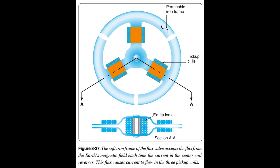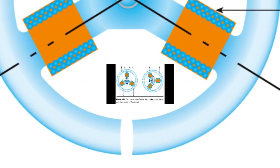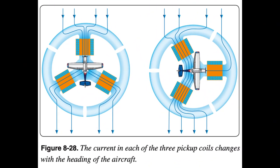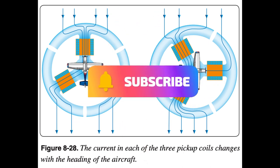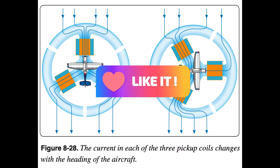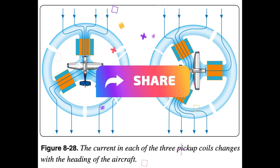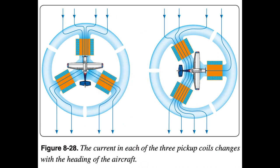During the times when this current reaches its peak — twice during each cycle — there is so much magnetism produced by this coil that the frame cannot accept the lines of flux from the Earth's field. As the current reverses between the peaks, it demagnetizes the frame so it can accept the flux from the Earth's field. As this flux cuts across the windings in the three coils, it causes current to flow in them. These three coils are connected such that the current flowing in them changes as the heading of the aircraft changes. The three coils are connected to three similar but smaller coils in a synchro inside the instrument case, and the synchro rotates the dial of a radio-magnetic indicator (RMI) or an HSI.